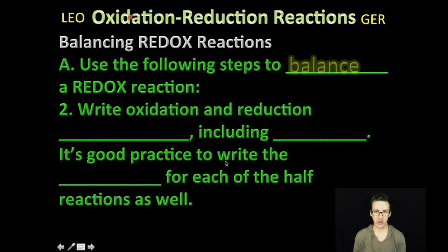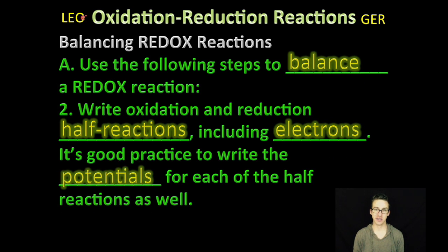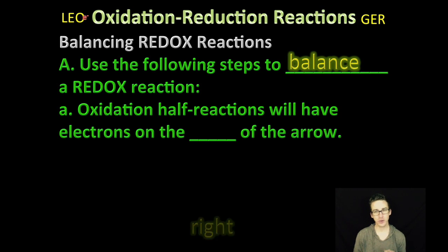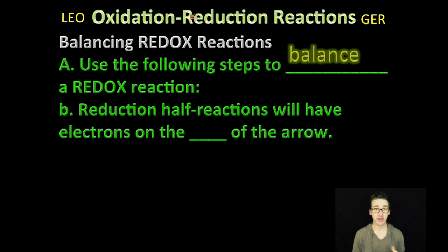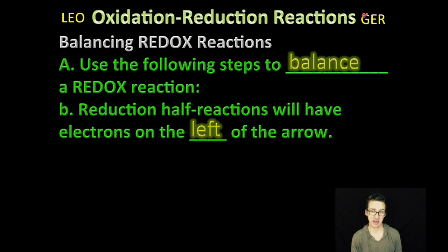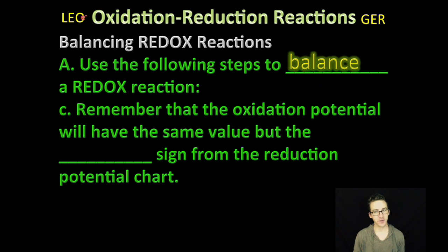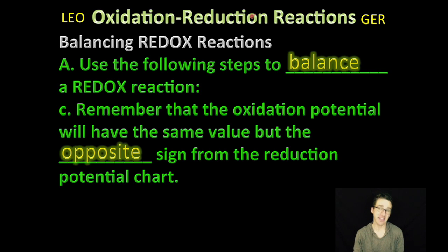Step number two: once you have identified what has been oxidized and what has been reduced, you're going to write the oxidation and reduction half reactions, including electrons either lost or gained. It's also really good practice to write the potentials for each of the half reactions as well. When you work through this step, it's important to remember that the oxidation half reactions will have the electrons on the right-hand side of the arrow — the product side — because they're losing electrons. The reduction half reactions will have the electrons on the left-hand side because they're gaining electrons. Also important: when you use your reduction potential chart, remember that the oxidation potentials are going to have the same value but the opposite sign.